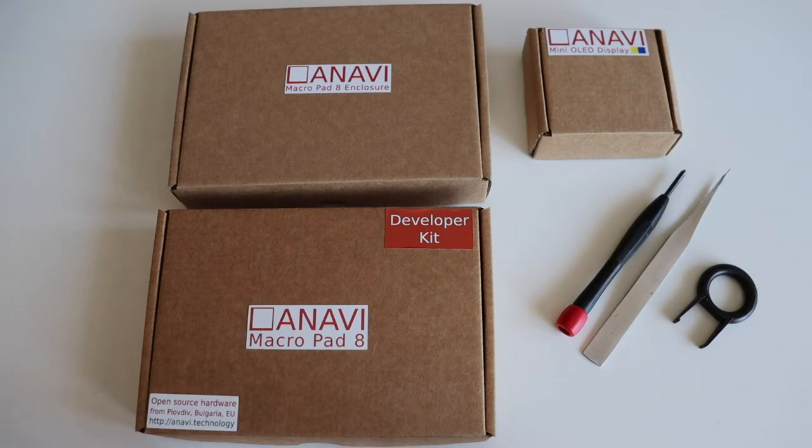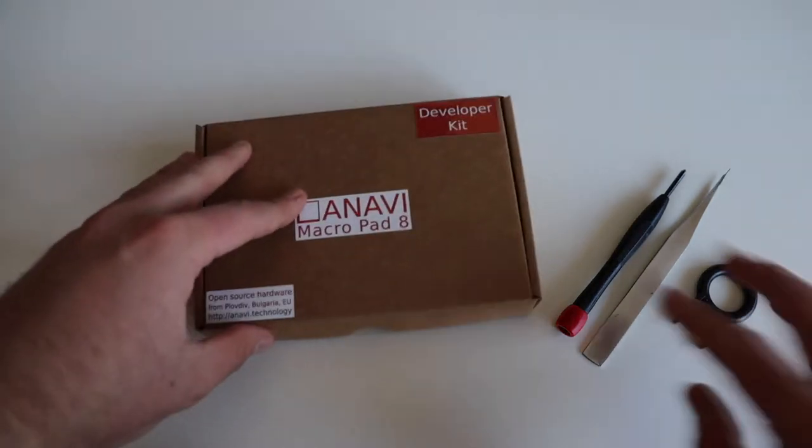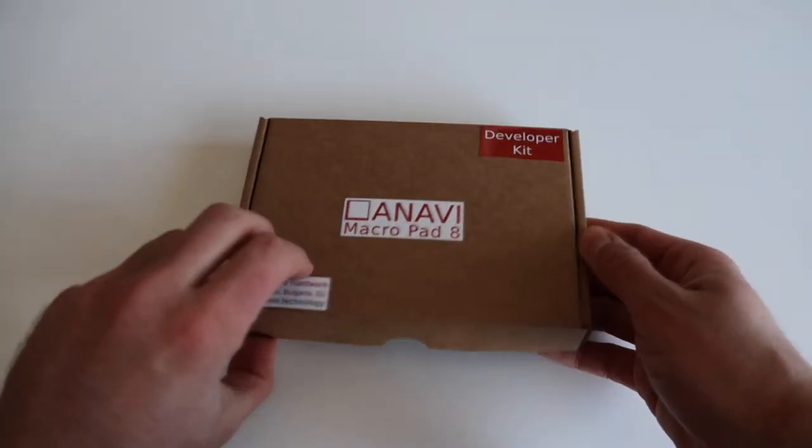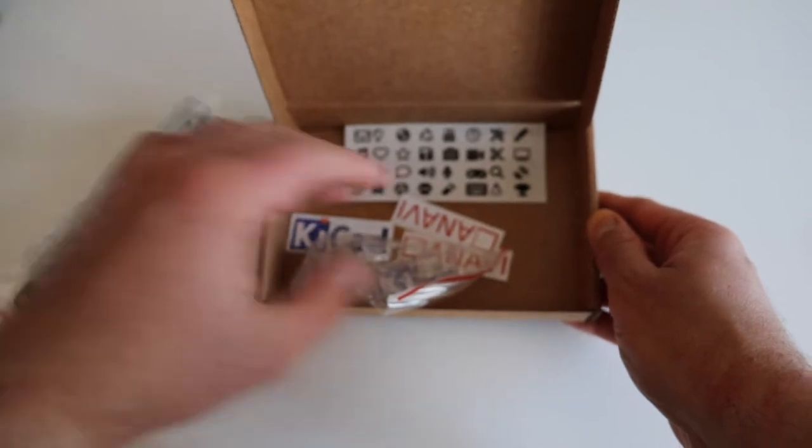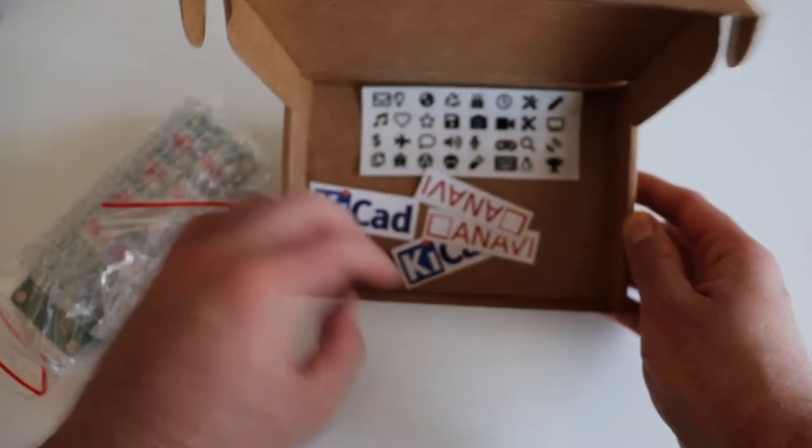Here I have the developer kit with the acrylic enclosures and a mini yellow blue OLED display. The kit does not require any soldering and the assembly guide is super simple. Although you can assemble it with your bare hands, simple tools like a screwdriver, tweezers and a keycap puller might be useful.